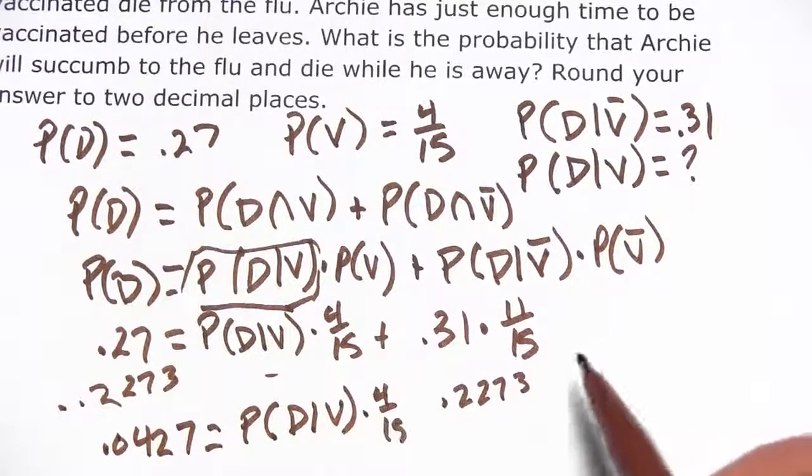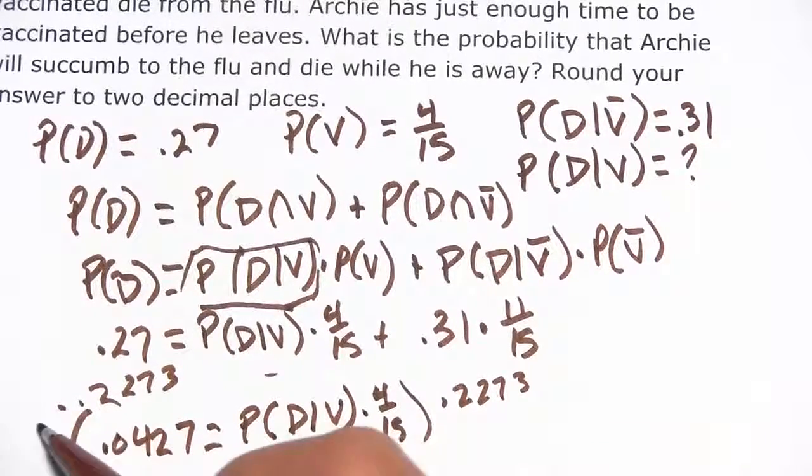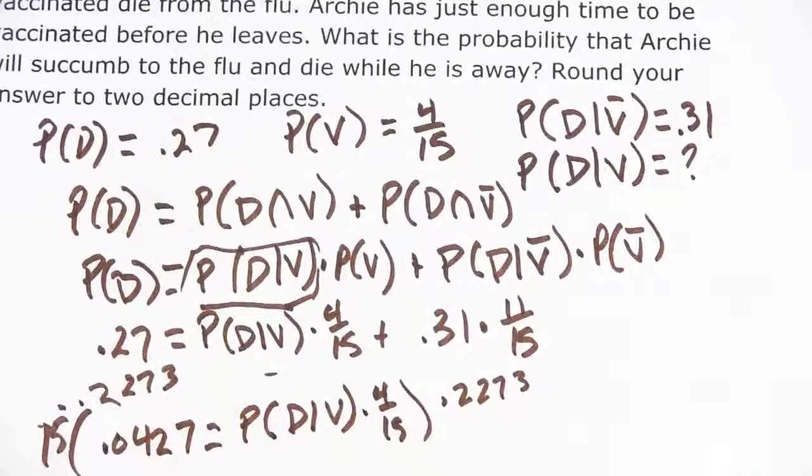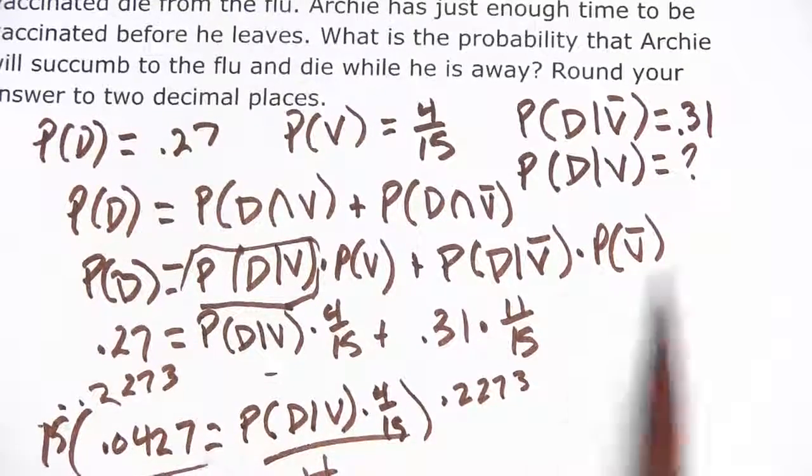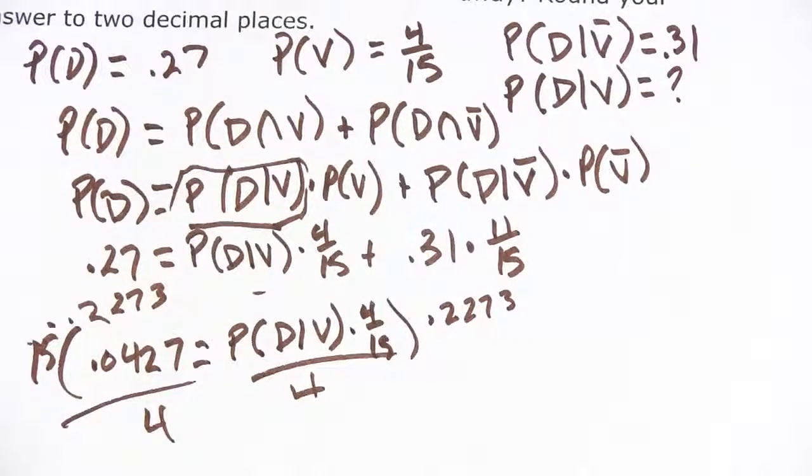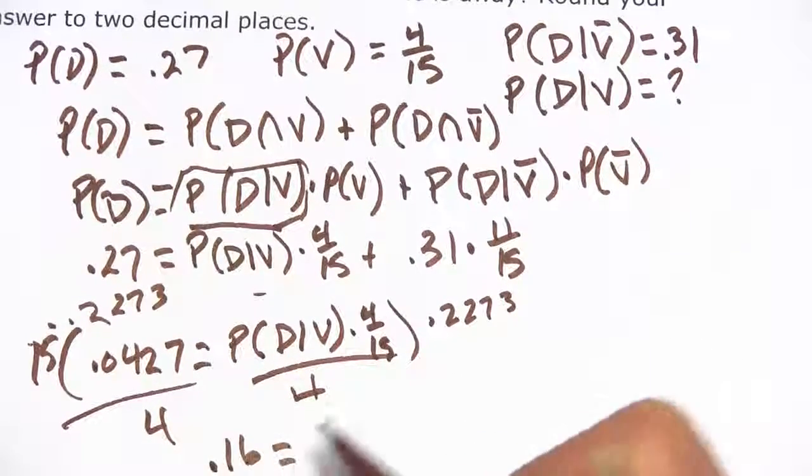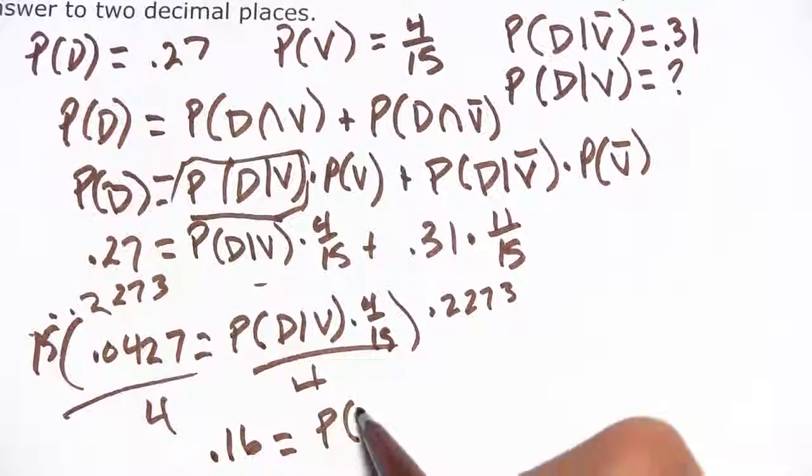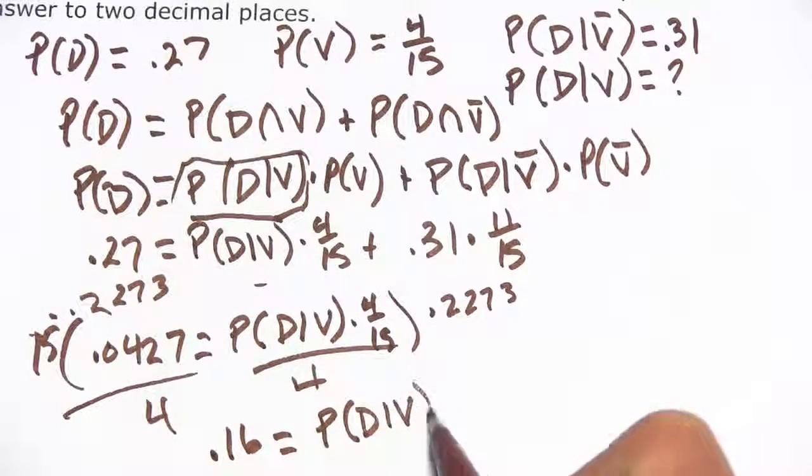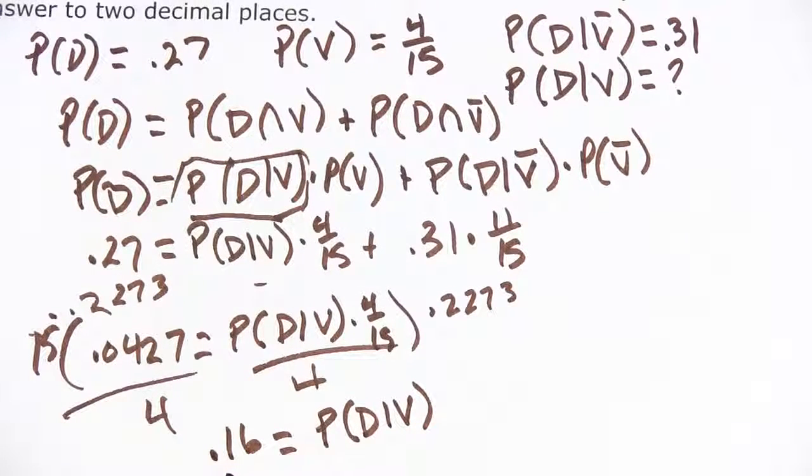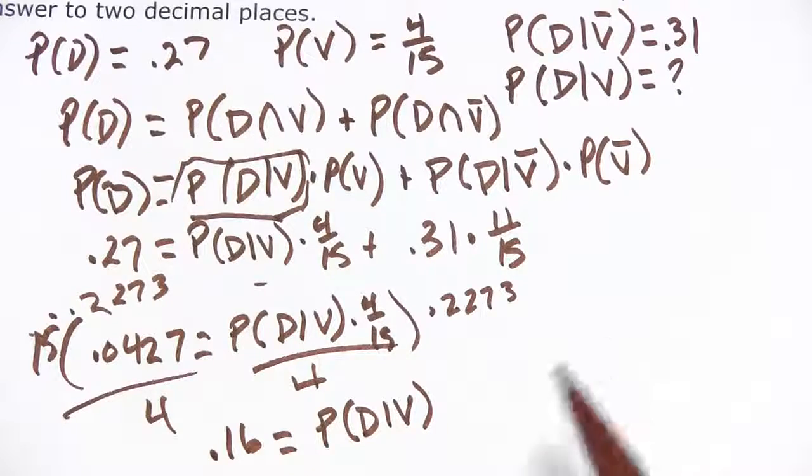We're going to multiply both sides by 15, then divide both sides by 4. Doing the calculation, we get 0.16 as the probability of dying if you have been vaccinated. That's smallish—it's still 16% chance of dying even after you get the vaccine, so pretty risky trip Archie's taking there. But that's a little bit of work with the law of total probabilities.